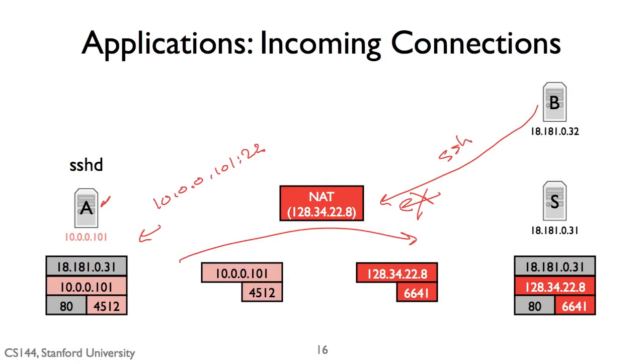But so this is the number one implication of sitting behind a NAT to an application, which is that essentially, if you're behind a NAT, generally speaking, other nodes, unless you coordinate very carefully, and I'll show some ways you can do it, nobody can open a connection to you.